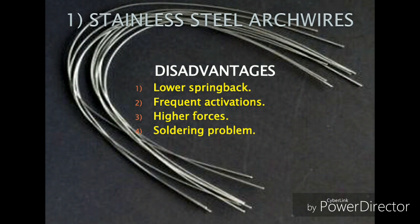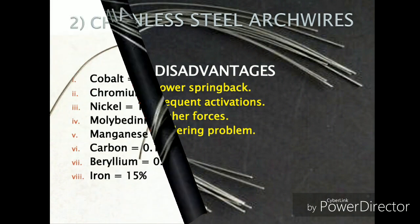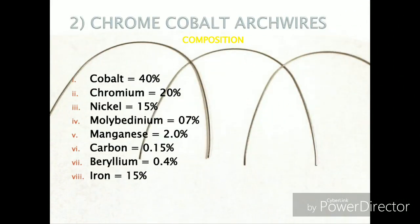The disadvantages of stainless steel arch wires: first, lower spring back property — it has lower spring back than nickel titanium alloys, making it a poor initial alignment arch wire. Second, more frequent activations are required because of the high stiffness. Third, these arch wires deliver higher forces compared to wires made of other alloys of the same diameter, which may cause patient discomfort. Also, soldering is demanding because if the temperature exceeds 500°C, it affects the corrosion resistance of the alloy.